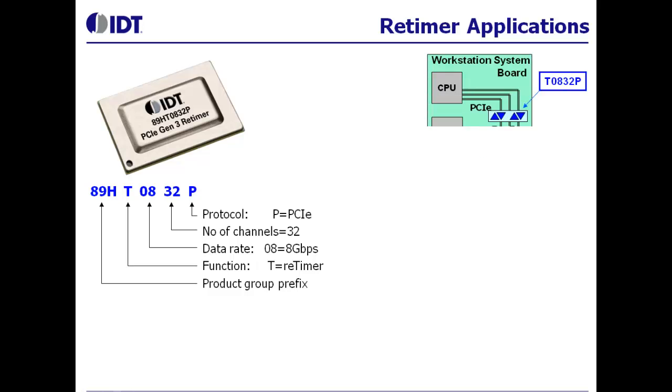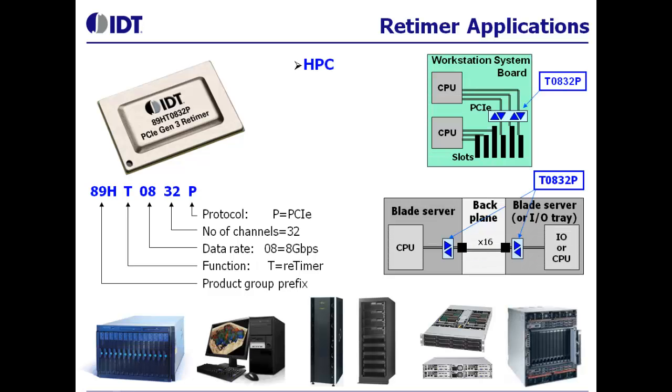IDT's T0832 retimer has 16 lanes, or 32 serial differential channels, each operating at 8 gigabits per second. The device is targeted for applications in high-performance computing, rack-and-blade servers, storage systems, desktop workstations, and telecom systems.